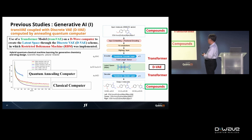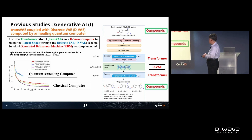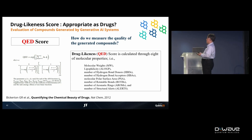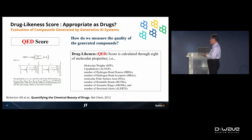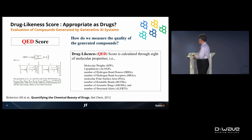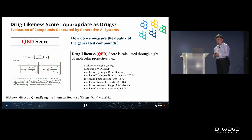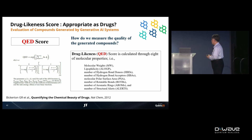Let's compare the generated distributions between classical and quantum computation. To evaluate the distributions, we use the QED score to assess drug-likeness. Defining drug-likeness directly is difficult, so we use the QED score as proposed in the literature.